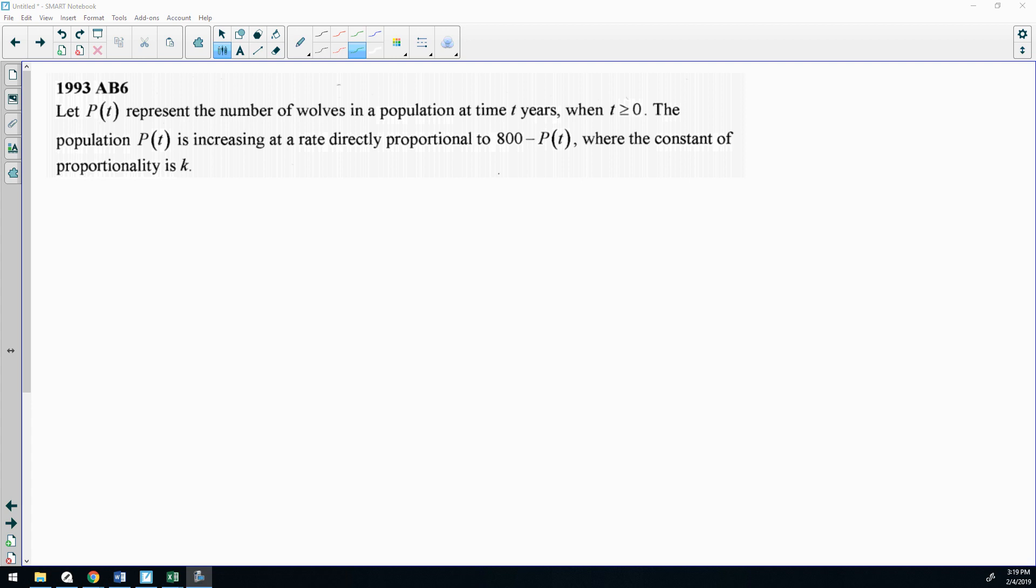From 1993, here's this problem where P represents the population of wolves. The population is increasing at a rate directly proportional to 800 minus P. So increasing at a rate, so P'(t) is directly proportional, some constant multiple of 800 minus P. So there I've translated that sentence into a math equation. They do tell you to use the constant of proportionality k. That's usually a standard go-to, but make sure you are consistent with what they tell you to use. For the sake of being consistent with differential equations, I don't like P'(t). I'll set this up: dP/dt equals k times (800 minus P). Then you would solve through separation.